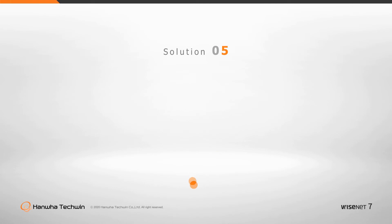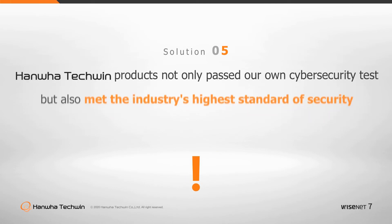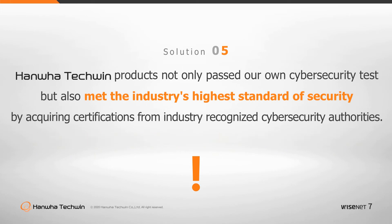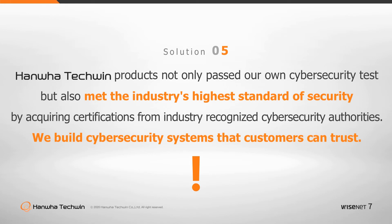By evaluating the objective level of product security and acquiring certifications from expert third parties, we build cybersecurity systems that customers can trust. Some video security manufacturers claim that they are secure by their own security standards and tests. Only by validation with industry-recognized cybersecurity authorities can we be assured that our products are secure. This is what Wisenet 7 has achieved.